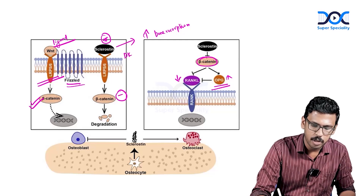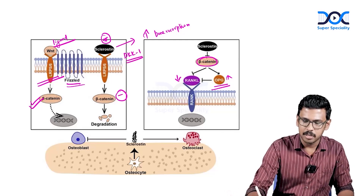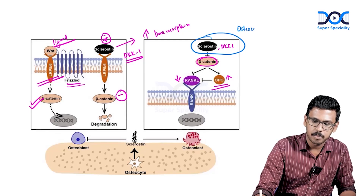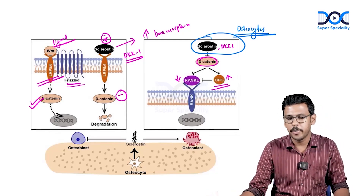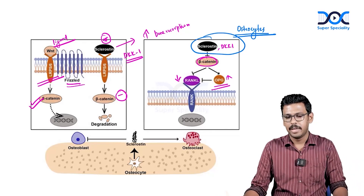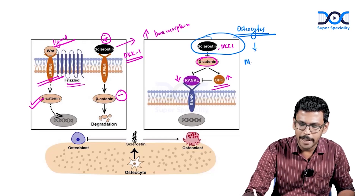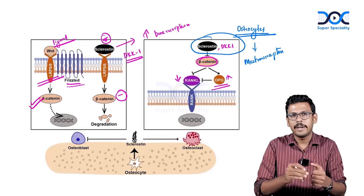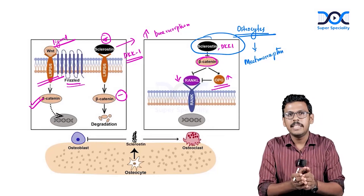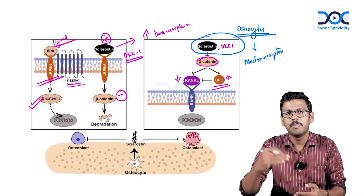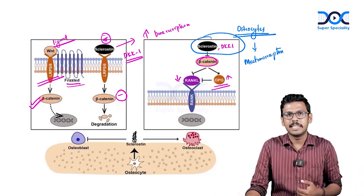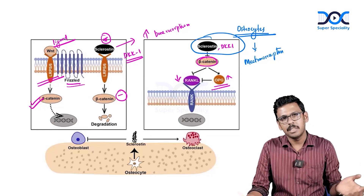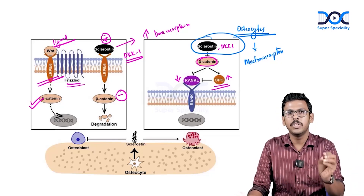Apart from sclerostin, another molecule called DKK1 also inhibits WNT signaling. Both sclerostin and DKK1 are produced from osteocytes. Osteocytes are mechanoreceptors — whenever there is a trauma or microfracture in bone, osteocytes detect mechanical stress through their long canaliculi and respond by stimulating more sclerostin, which inhibits WNT signaling, recruiting more osteoclasts to resorb damaged bone.